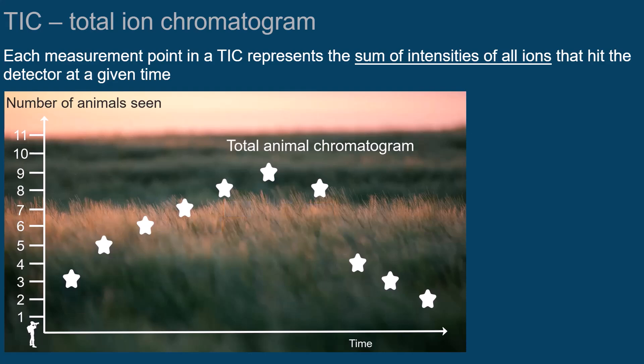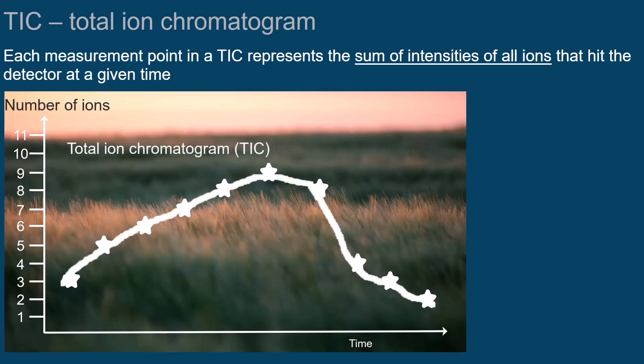The number of animals on the y-axis corresponds to the number of ions in the ion chromatogram, which can also be expressed by the signal intensity.